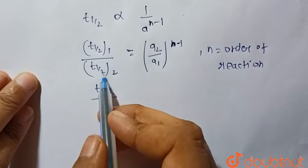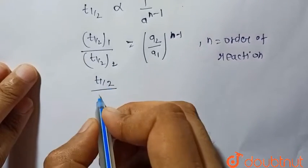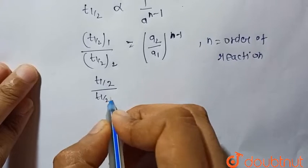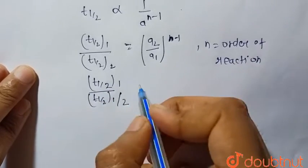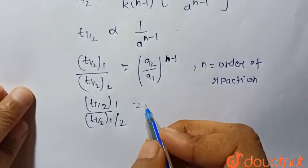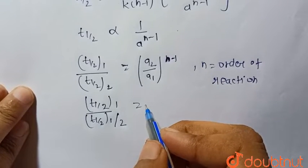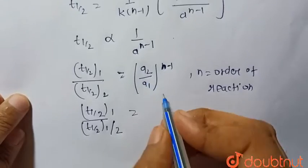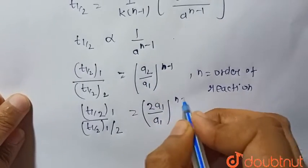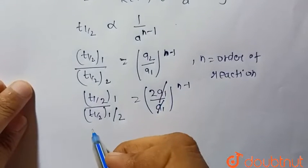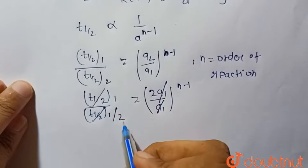Since t_half_2 gets halved, that is t_half_1 by 2, when the initial concentration is doubled, that is a_2 becomes 2a_1, so 2a_1 upon a_1 to the power (n-1). a_1 cancels and t_half_1 cancels.